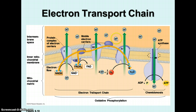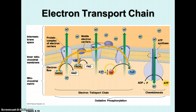This part of the process is called the electron transport chain because the high-energy electrons are passed from one to another of these proteins, eventually transferring all their energy to pump hydrogen ions into the intermembrane space. Eventually, the electrons join with two hydrogen ions and half an oxygen molecule to produce water. Oxygen is the final electron acceptor here.